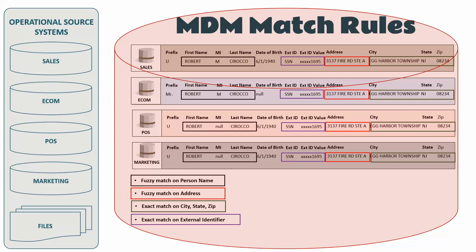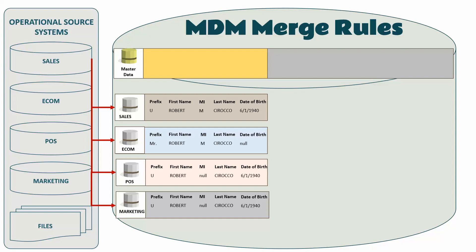Then I apply an exact match on an external identifier — in this case, the social security number. So when I apply fuzzy match on person name, fuzzy match on address, exact match on city/state/zip, and exact match on the social security number, even though the records are coming from four different sources, the matching identifies them all as a match.